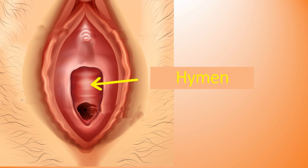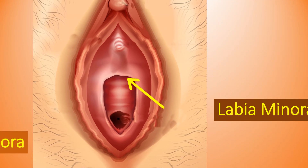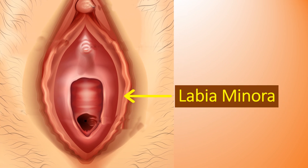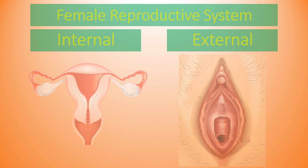Labia majora carry sebaceous glands and are a prominent pair of rounded folds of skin which cover the labia minora. Labia minora are external female genitalia which lie just inside the labia majora and surround the vagina and urethra. This concludes our detailed study about the female reproductive system. Thank you, and don't forget to like and subscribe to my channel.